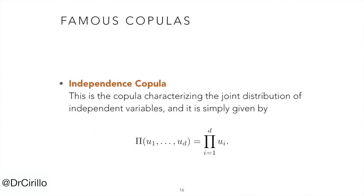There are different examples of copulas we can take into consideration. For instance, the independence copula. That is the copula characterizing the joint distribution of independent random variables. As expected, it is the product of the probability transforms.